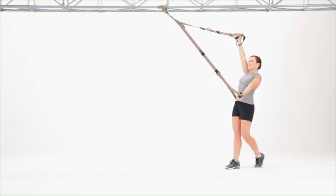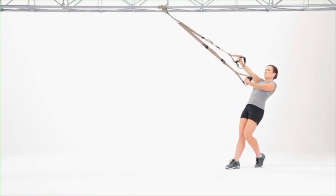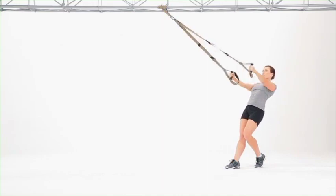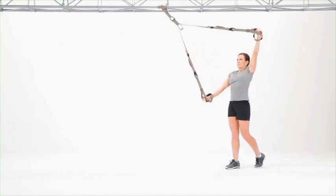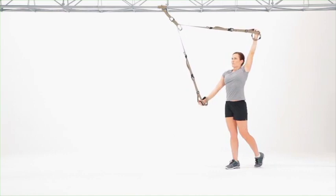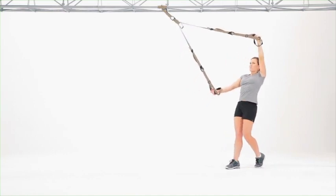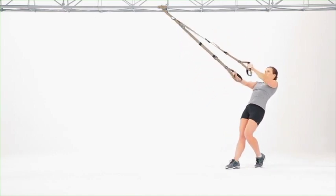Keep tension on the suspension trainer without letting it saw through the equalizer loop. Down arm is your strength arm, up arm provides mobility into that shoulder, all while maintaining a strong plank throughout the exercise.